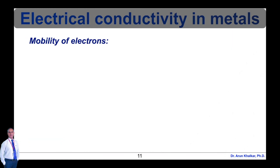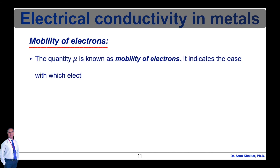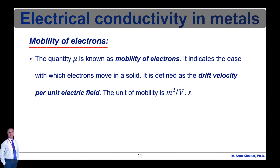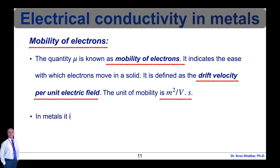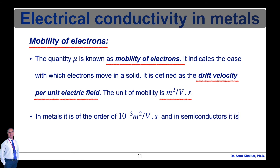Now let's see the definition of the mobility of electrons. The quantity μ is known as the mobility of electrons. It indicates the ease with which electrons move in a solid. It is defined as the drift velocity per unit electric field. The unit of mobility is m² / (V·s). In metals it is of the order of 10⁻³ m²/V·s, and in semiconductors it is of the order of 10⁻¹ m²/V·s.